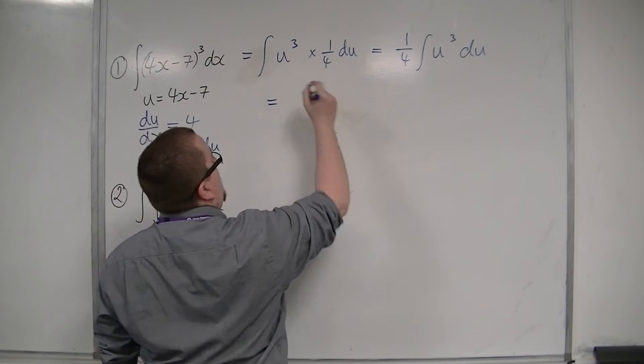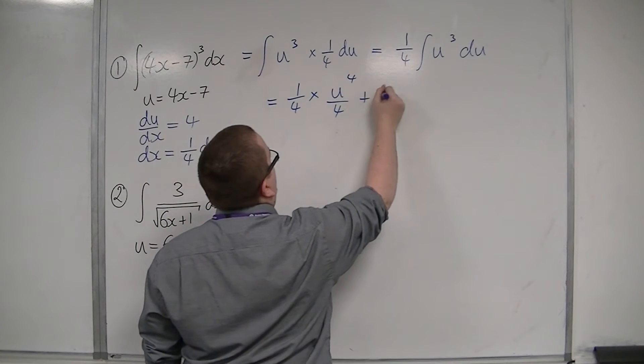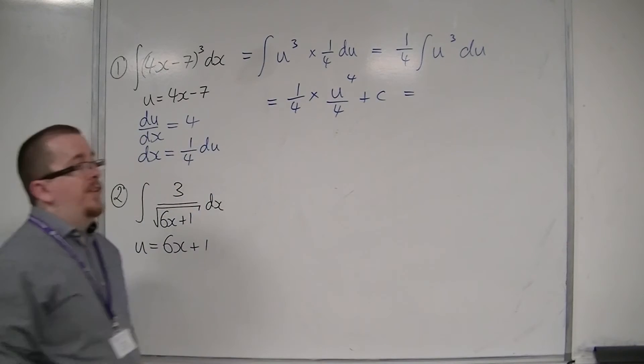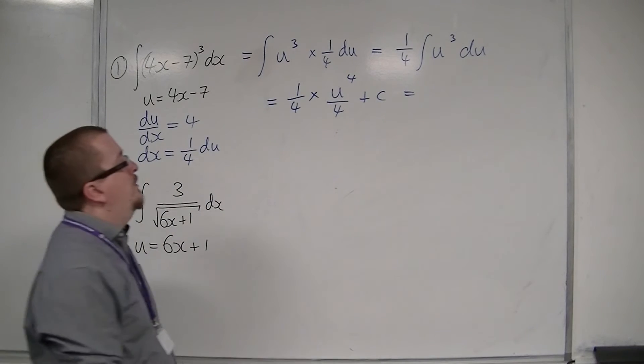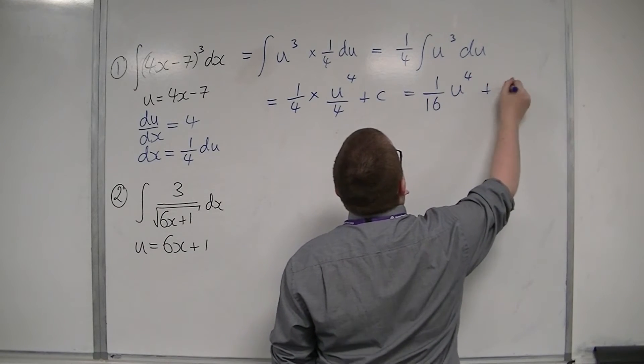Then, I now integrate. So add 1 to the power, divide by the new power. Then you've got that constant of integration, because you've got an indefinite integral. So we have 1 16th, u to the 4, plus c.